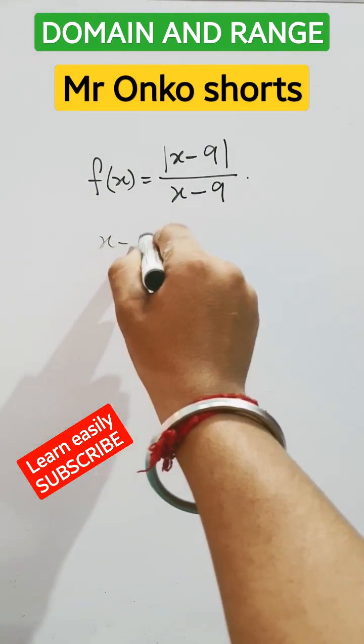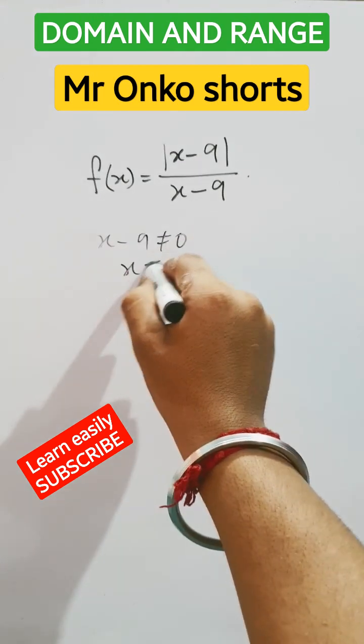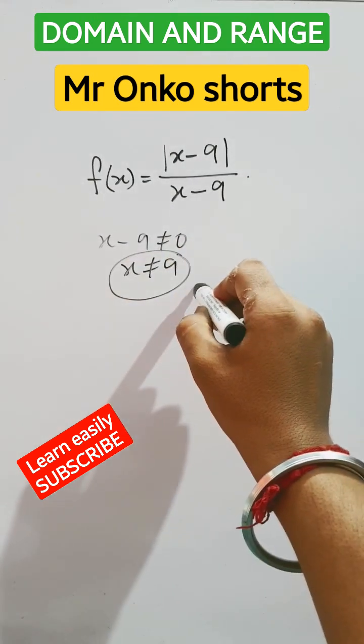First of all, the denominator can't be 0, so x can't equal 9. So the domain of the function will be x belongs to all real numbers except the value 9. This is the domain.